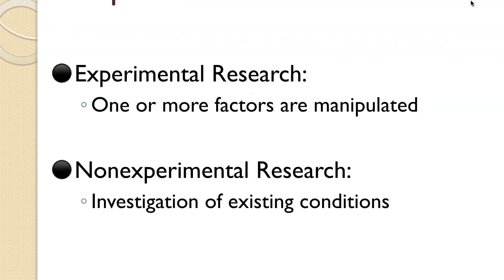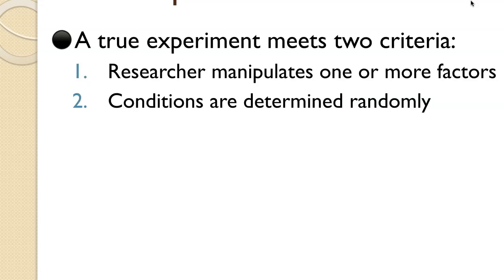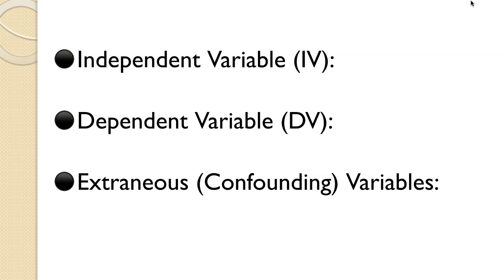To go one step further, a true experiment meets two criteria. First, the researcher manipulates one or more factors. Second, conditions are determined randomly. If I took kids who stutter and randomly placed them into group A and group B, that's a true experiment. But if parents chose which therapy their child received, or the first eight arrivals got one therapy and the last eight got another, that's not random — it's still experimental research, but not a true experiment.